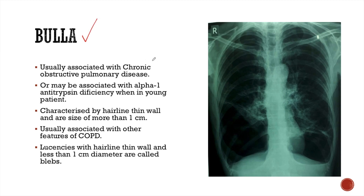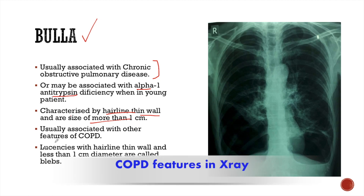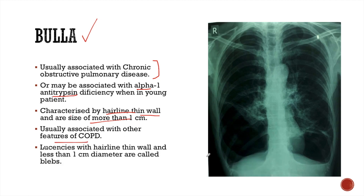Bulla is usually associated with chronic obstructive pulmonary disease, or it may also be associated with alpha-1 antitrypsin deficiency when it occurs in a young patient. Bullas are characterized by a lucent lesion with a hairline thin wall and have a size more than one centimeter. Other features of COPD are associated with bulla, like flattening of the diaphragm.